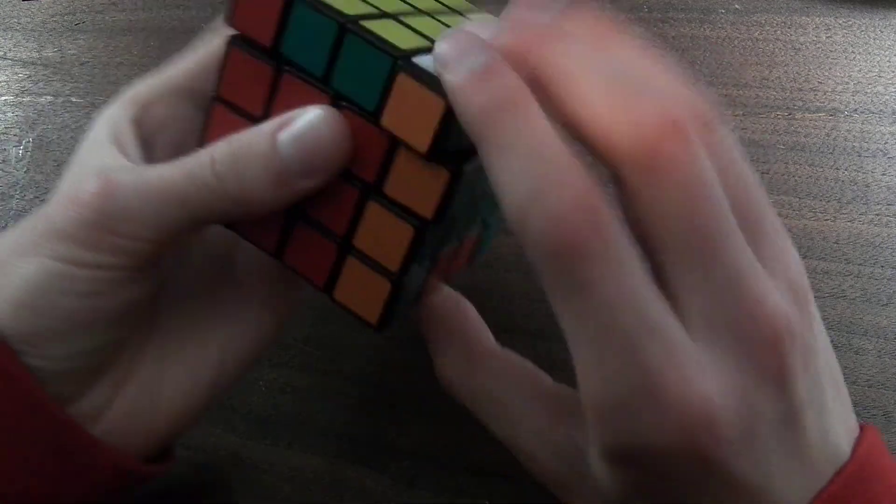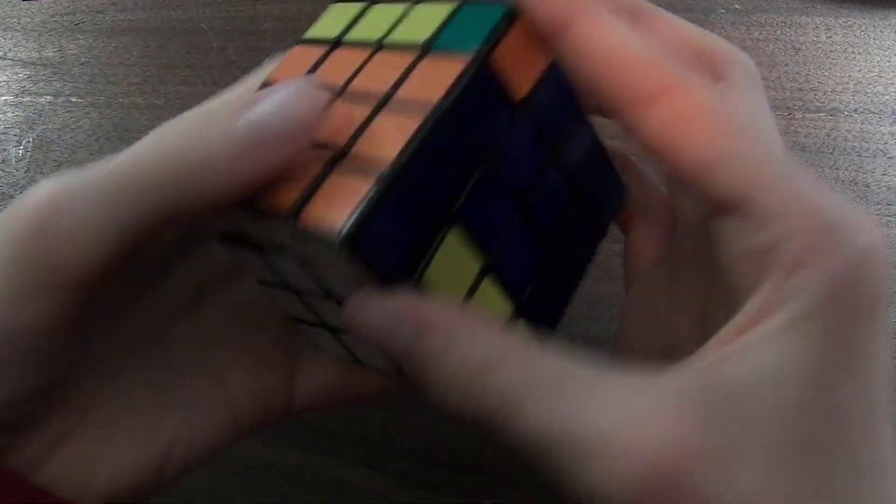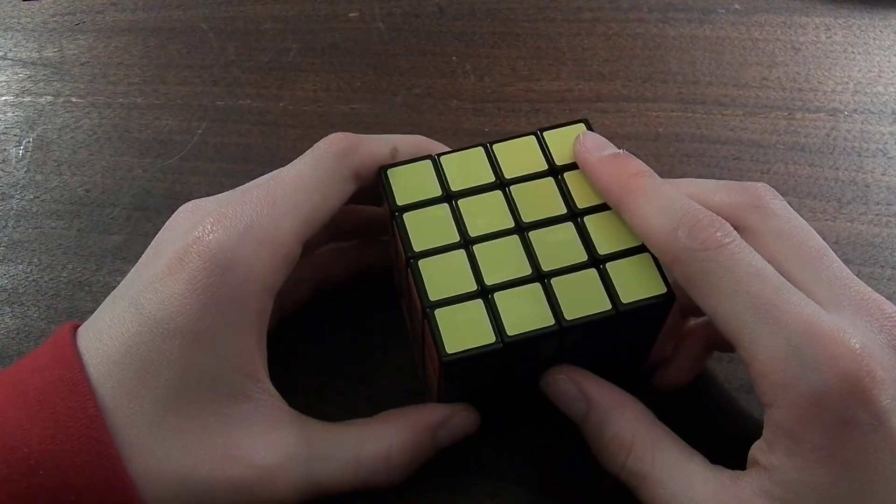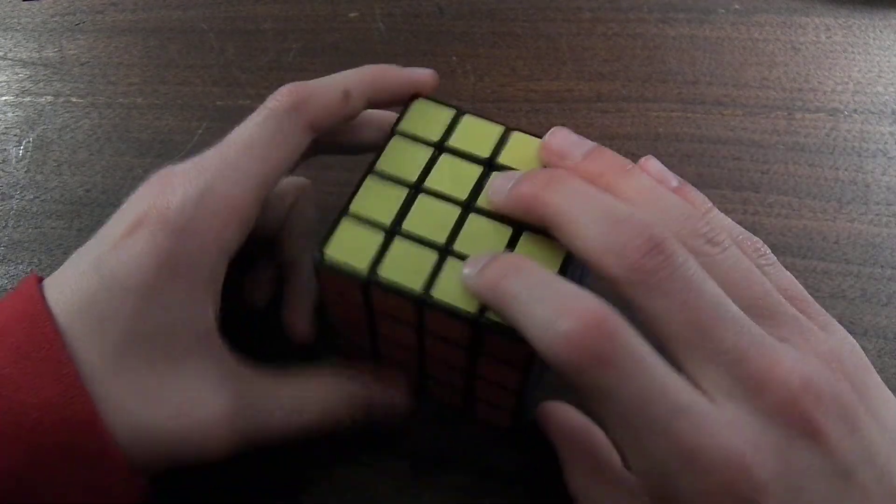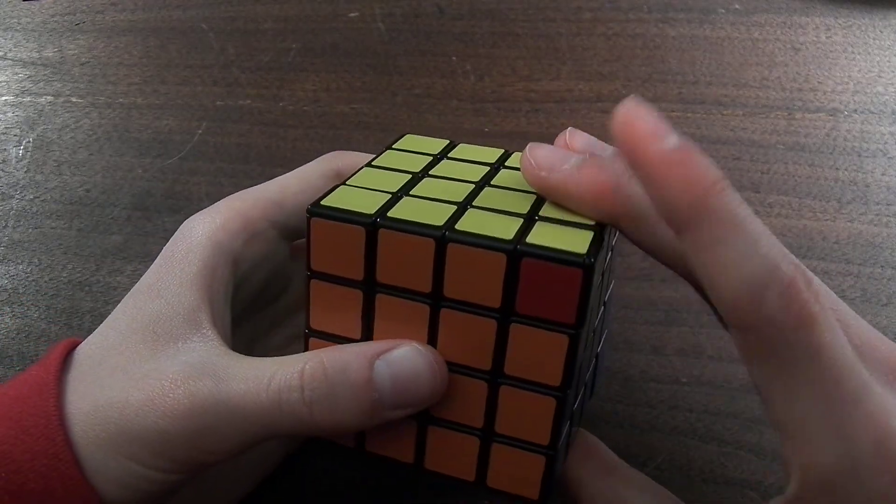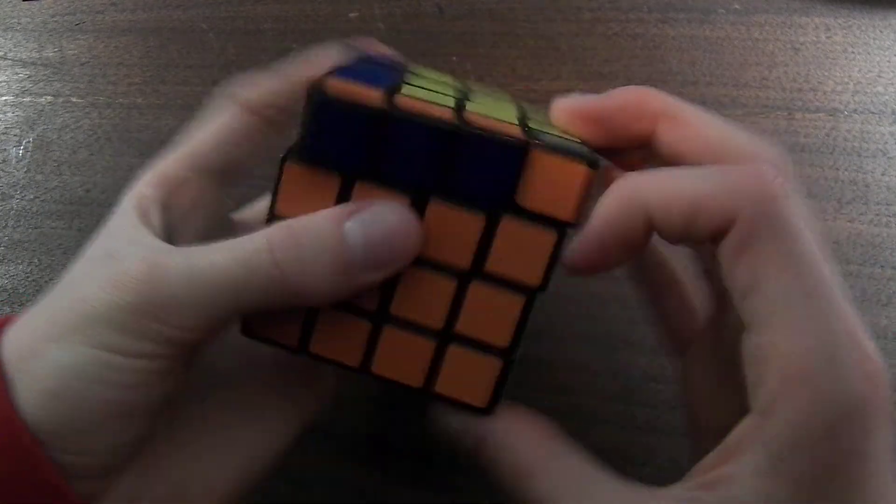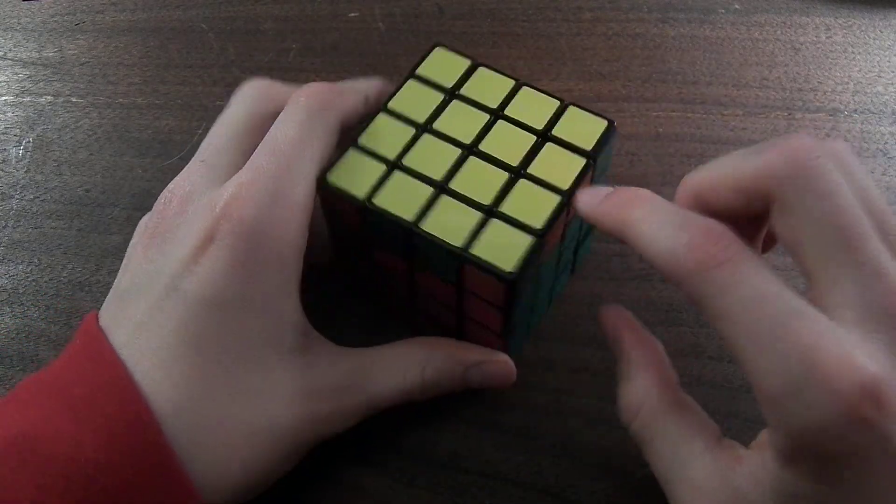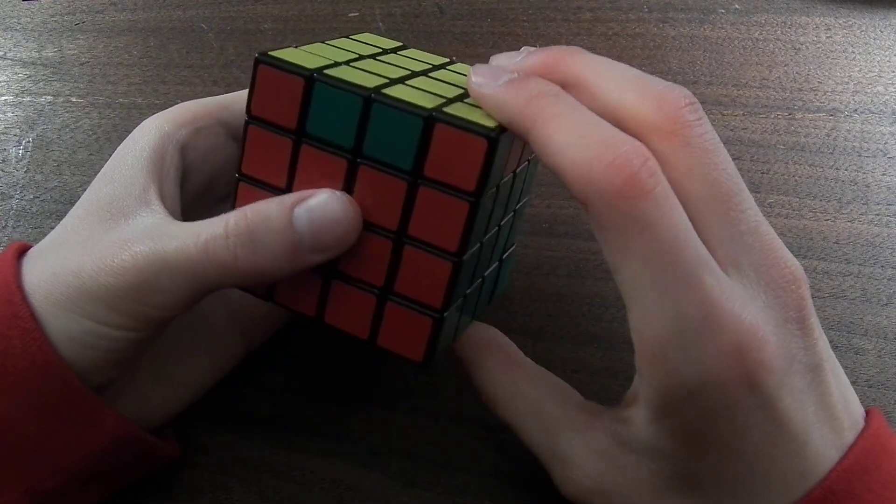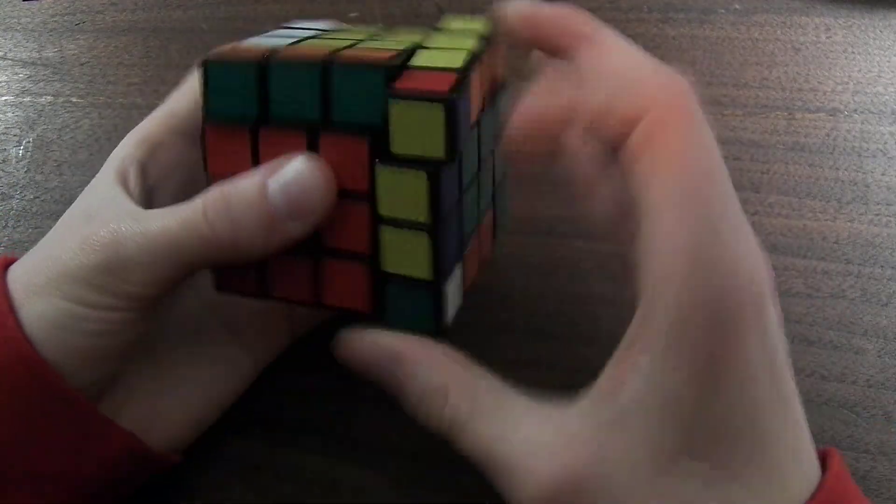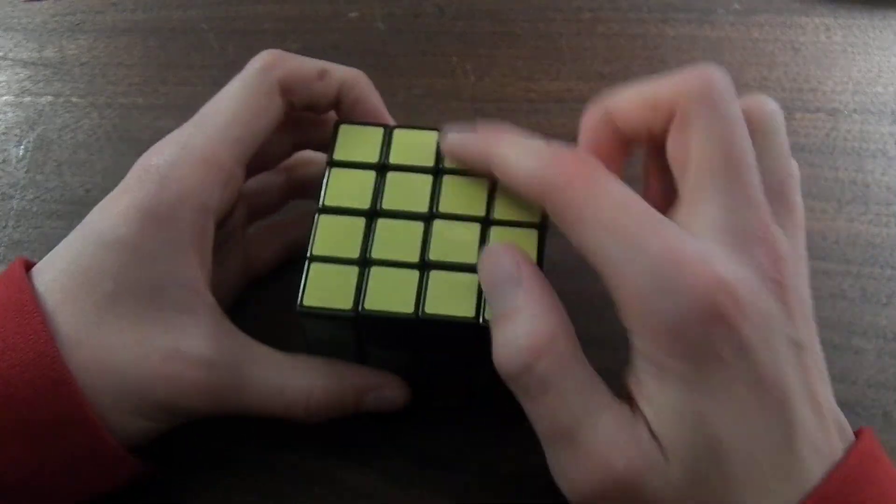If you have this case, which is diagonal corner parity, where these two corners need to be flip-flopped, here's the algorithm you should do. Do a Y perm. And after that, you're going to get this adjacent edge parity. Now I'm going to do a U perm. After you do the U perm, you do a Y perm and then a U perm, and then after you're going to have opposite edge parity.